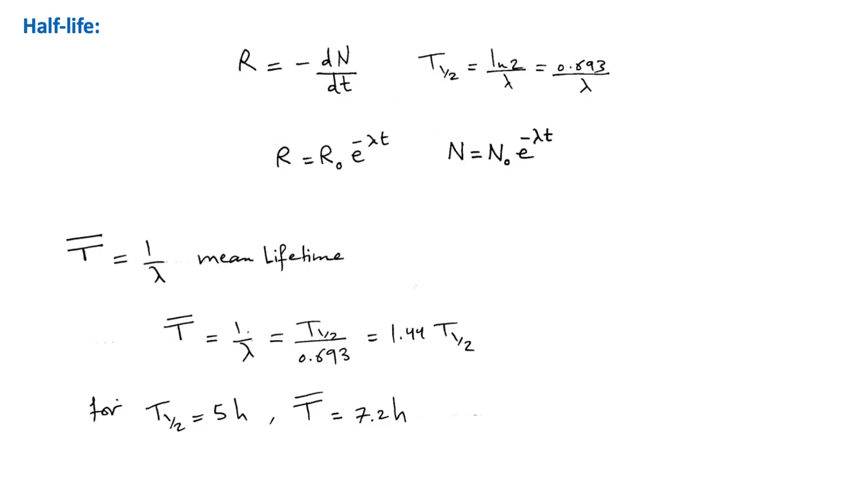One thing to note here is that the half-life of a radionuclide is not the same as its mean lifetime. The mean lifetime is the reciprocal of its decay probability. So if the half-life is 5 hours, then the mean lifetime is 7.2 hours.